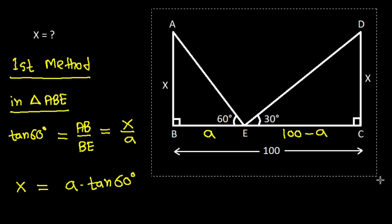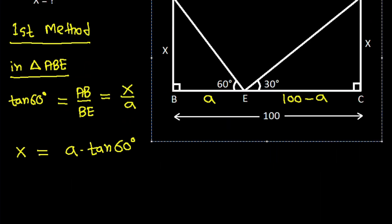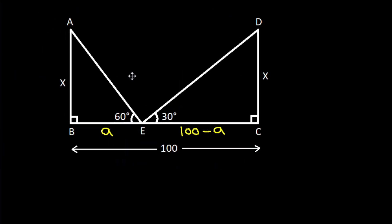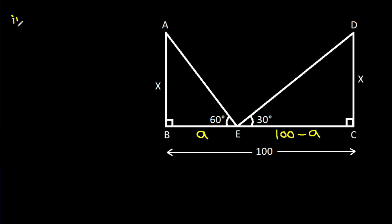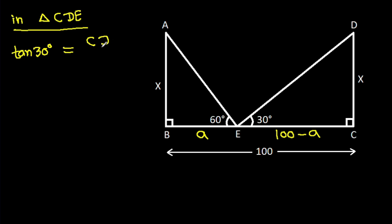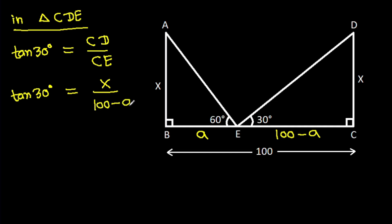And in triangle CDE, tan 30 degrees will be CD over CE. And tan 30 degrees is x over 100 minus A. So x will be 100 minus A times tan 30 degrees.